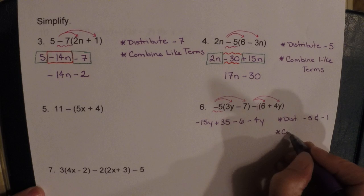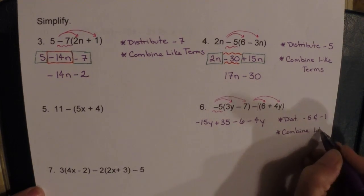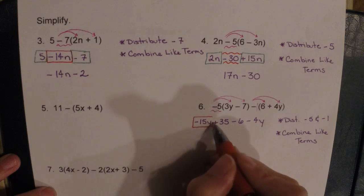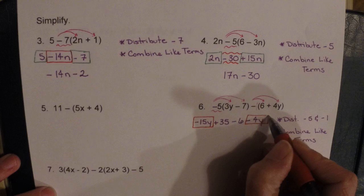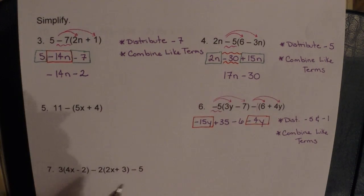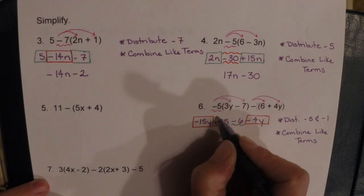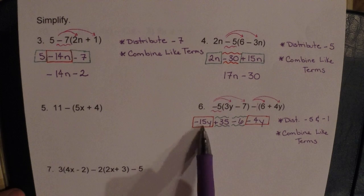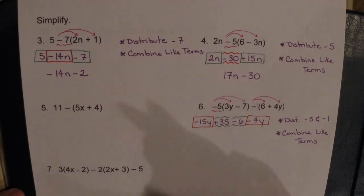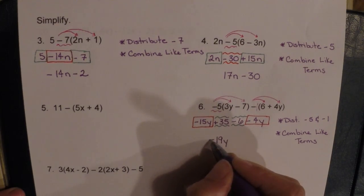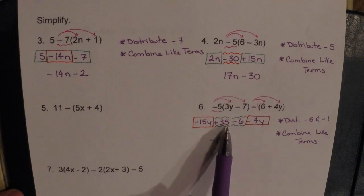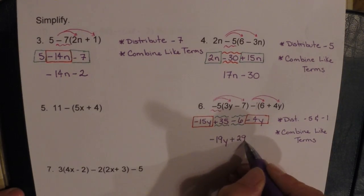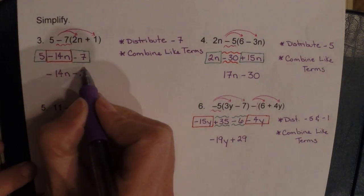Now remember the next step — combine like terms. We have negative 15y and negative 4y as like terms. In the middle we have positive 35 and negative six. Combining: negative 15 minus four is negative 19y, and positive 35 minus six is positive 29. So the answer is negative 19y plus 29.